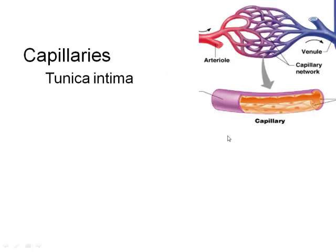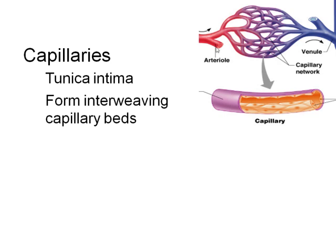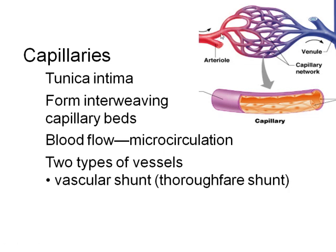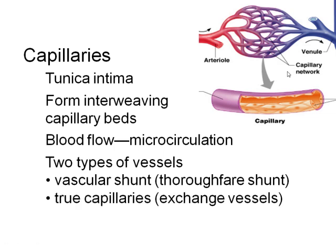The capillaries are composed only of a tunica intima. This epithelium sits on a basement membrane, so there's a little matrix there. The capillaries come off of an arteriole and make an interweaving network called capillary beds, ensuring blood flows to every single cell. There are two types of vessels in the capillary bed: the vascular or thoroughfare shunt, which is a direct connection between the arteriole and venule, and the true capillaries that branch off that thoroughfare shunt.